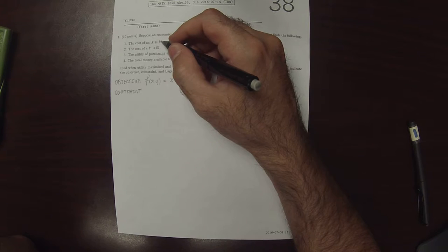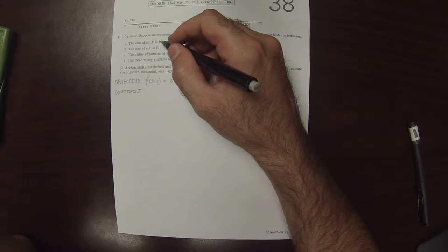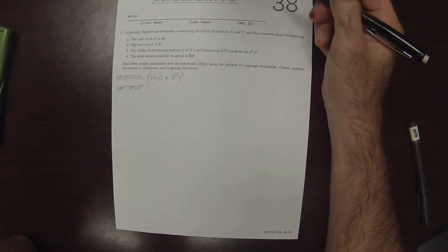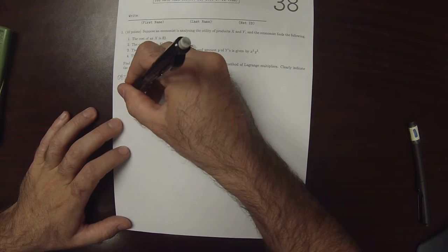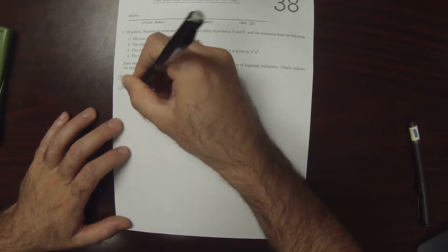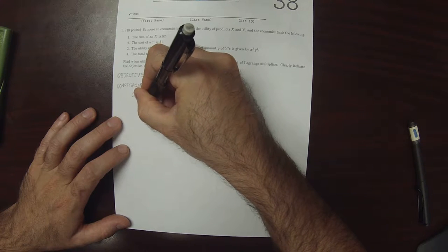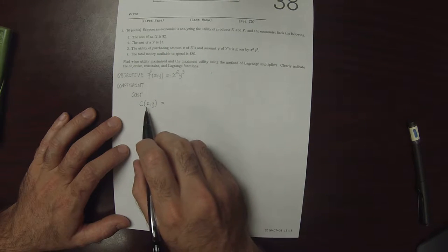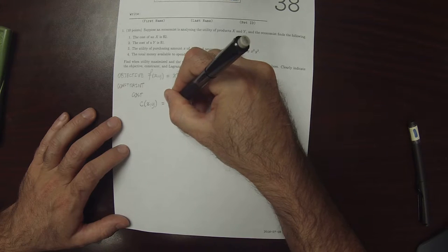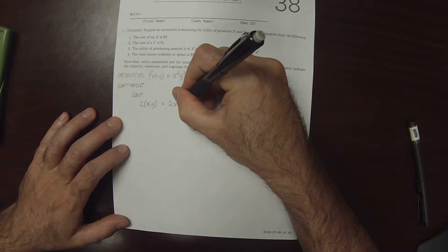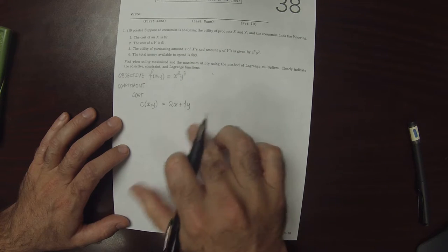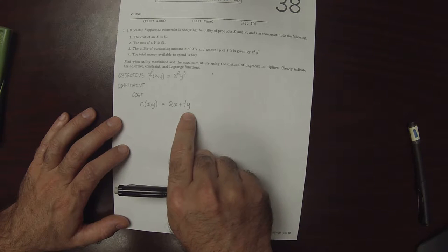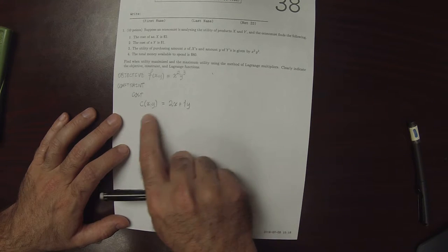It says that the cost of an x is $2, the cost of a y is $1. So the cost function, if we call that c, would be 2x plus 1y. If we got 5x's and 3y's, the cost would be $10 plus $3 is $13. So that's the cost function.